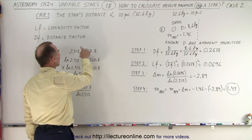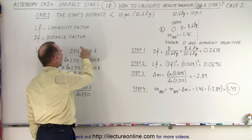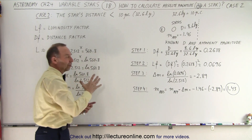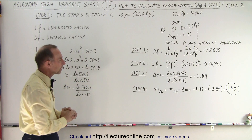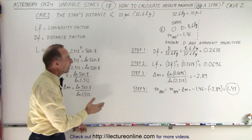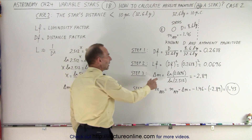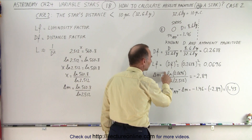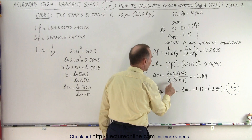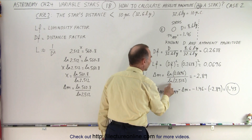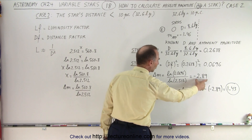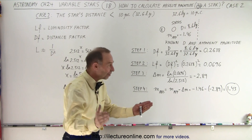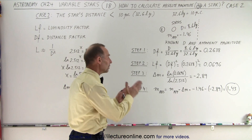The way we find delta m is to go through this process. Finally, we get delta m by taking the natural log of the luminosity factor divided by the natural log of 2.512, which gives us negative 2.89. That's the difference in magnitude between the apparent and the absolute magnitude for Sirius.